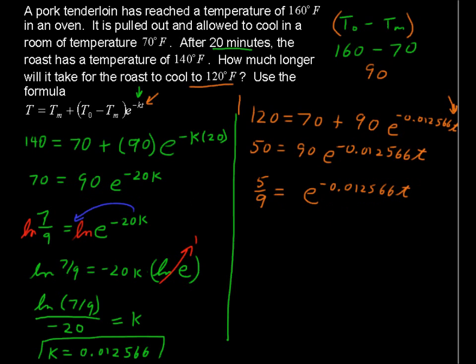Take the natural log of each side, and then we can take that exponent and move it out to the front. Multiply it by the natural log of E, and we get the natural log of 5 ninths equals negative 0.012566 T times the natural log of E. And remember this natural log of E is just 1.